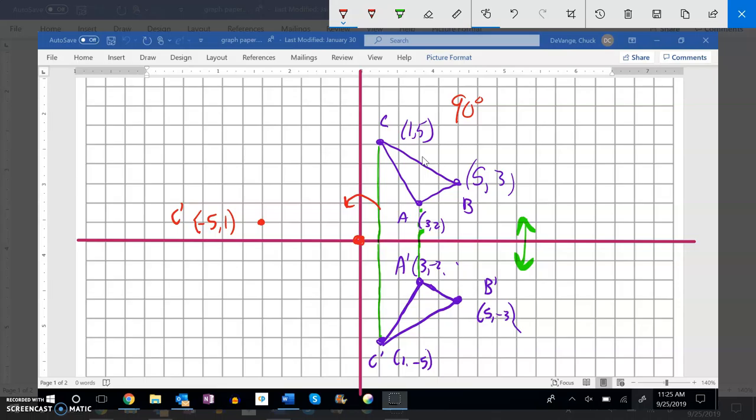This point 3, 2, it's over 3, up 2. Now instead of being over 3, it's going to be back 2 but up 3. So notice it's negative 2, 3. That's A prime. And if I take this point 5, 3, that's over 5, up 3. This will be back 3, 1, 2, 3, up 5, 1, 2, 3, 4, 5. I'm sorry, negative 3, 5.